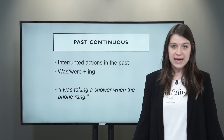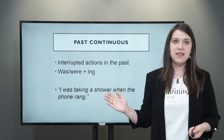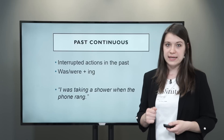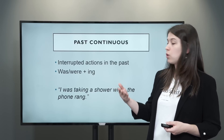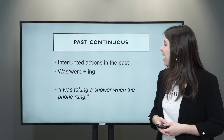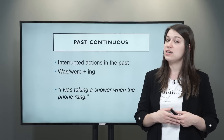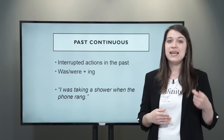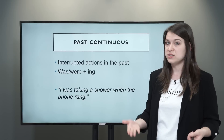Now let's look at the past continuous — these are interrupted actions in the past, something that is ongoing and then is interrupted by another action. We form the past continuous with the verb to be in the past simple — so was or were depending on the subject — plus the -ing ending. For example: I was taking a shower when the phone rang. The ongoing action in the past is to take a shower, and the action that interrupts it is the phone ringing. The verb to ring in the past simple is rang.